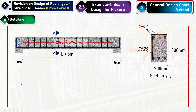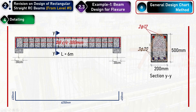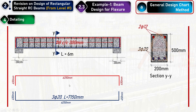The bar schedule shows the dimensions of each bar. With a total beam depth of 500 mm and clear cover of 25 mm on each side, the internal bending dimension is approximately 500 − 50 = 450 mm. Adding the beam length, the total bar length is approximately 7150 mm (7.15 m). The top 2Ø12 bars have a similar total length.